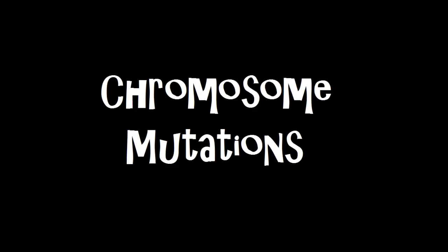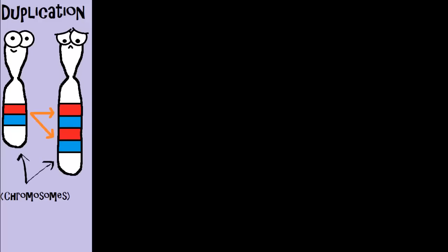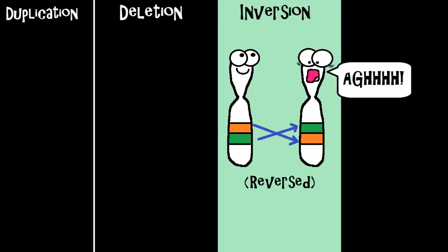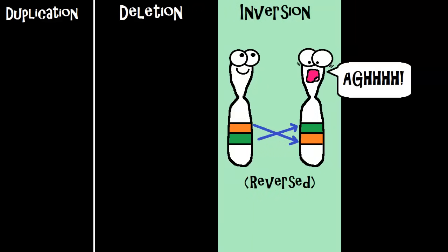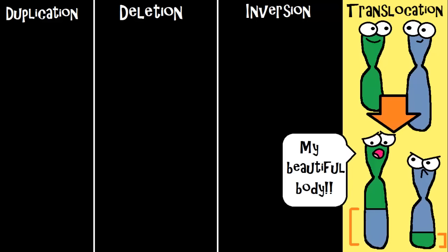Just like insertion in a gene mutation where bases got added, you can have duplication in chromosomes — where extra copies of genes or that chromosome are generated. There's deletion, where genetic material from the chromosome breaks off. Inversion is when a broken chromosome segment gets reversed and put back on the chromosome. Or translocation, where a fragment from one chromosome breaks off and attaches to another chromosome.